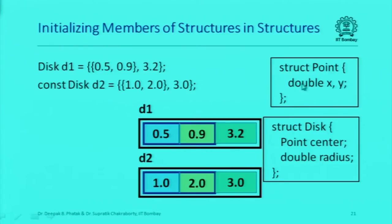I could also initialize members of hierarchical structures in a specific way. If I wanted to initialize a variable of type point, I could just specify the values of x and y within braces. But how do I initialize a variable of type disk where one of the members is itself a structure point which has two members? We use the same approach — here I am initializing d1 of type disk.